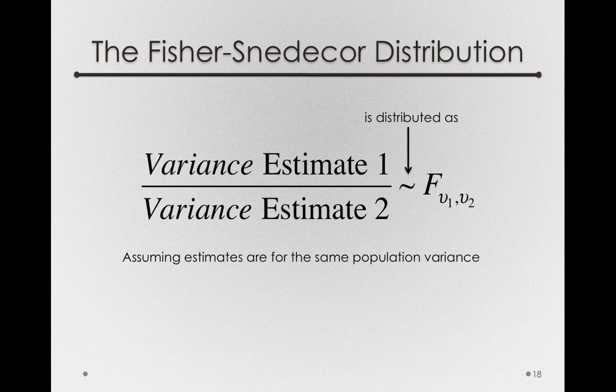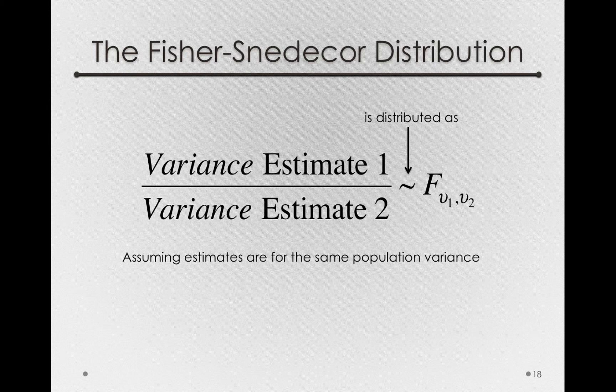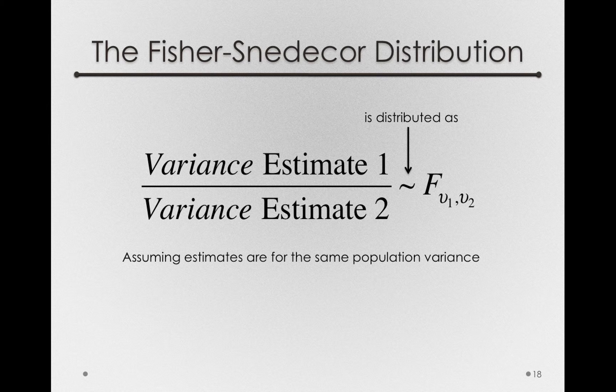The Fischer-Snedecor distribution is simply the shape that we would find if we formed a ratio of two separate, independent estimates of a population variance.